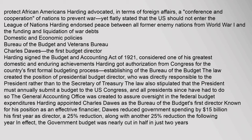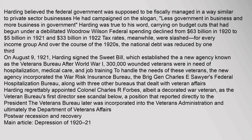Harding got authorization from Congress for the country's first formal budgeting process, establishing the Bureau of the Budget. The law created the position of Presidential Budget Director, who was directly responsible to the President rather than to the Secretary of Treasury. The law also stipulated that the President must annually submit a budget to Congress. The General Accounting Office was created to assure oversight in federal budget expenditures. Harding appointed Charles Dawes as the Bureau of the Budget's first director. Dawes reduced government spending by $1.5 billion his first year — a 25 percent reduction — along with another 25 percent reduction the following year, nearly cutting the government budget in half in just two years.